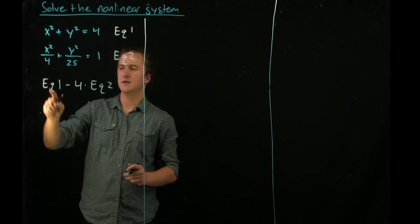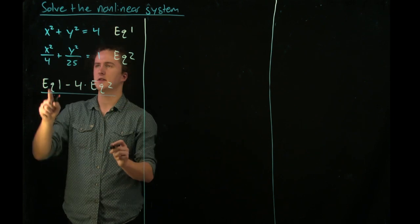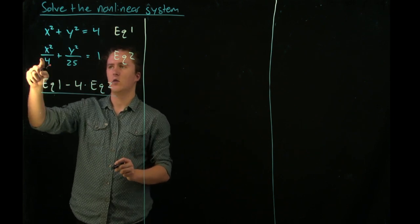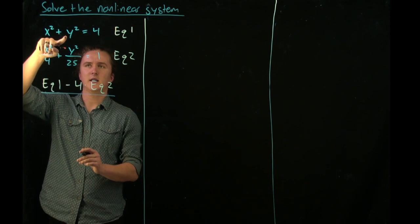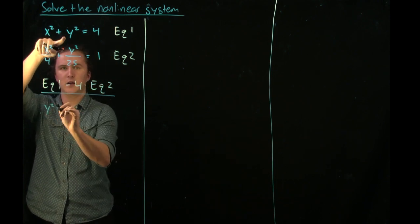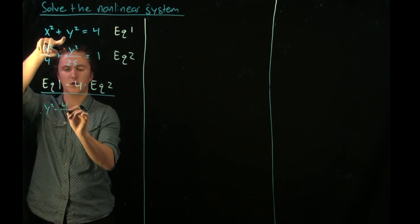As stated, when we perform this operation, the x squared drop out and we get y squared minus 4 twenty-fifths y squared.